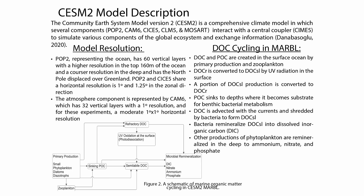The schematic shown is how marine organic matter is cycled in CESM2 in the Marine Biogeochemistry Library. DOC and POC are created in the surface. Refractory DOC is converted to semilabile DOC by UV radiation in the surface ocean, and portions of semilabile DOC are converted back to refractory DOC. POC sinks to depth where it's substrate for bacterial metabolism, and then bacteria remineralize the semilabile DOC into CO2 or dissolved inorganic carbon.